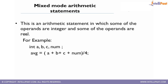Mixed mode arithmetic statements use both integer and float. For example, if a, b, c, and num are declared as integers and we calculate average = (a + b + c + num) / 4, then a + b + c + num gives an integer, but dividing by 4 can give a floating-point value. So average should be declared as float and a, b, c, num as integers.